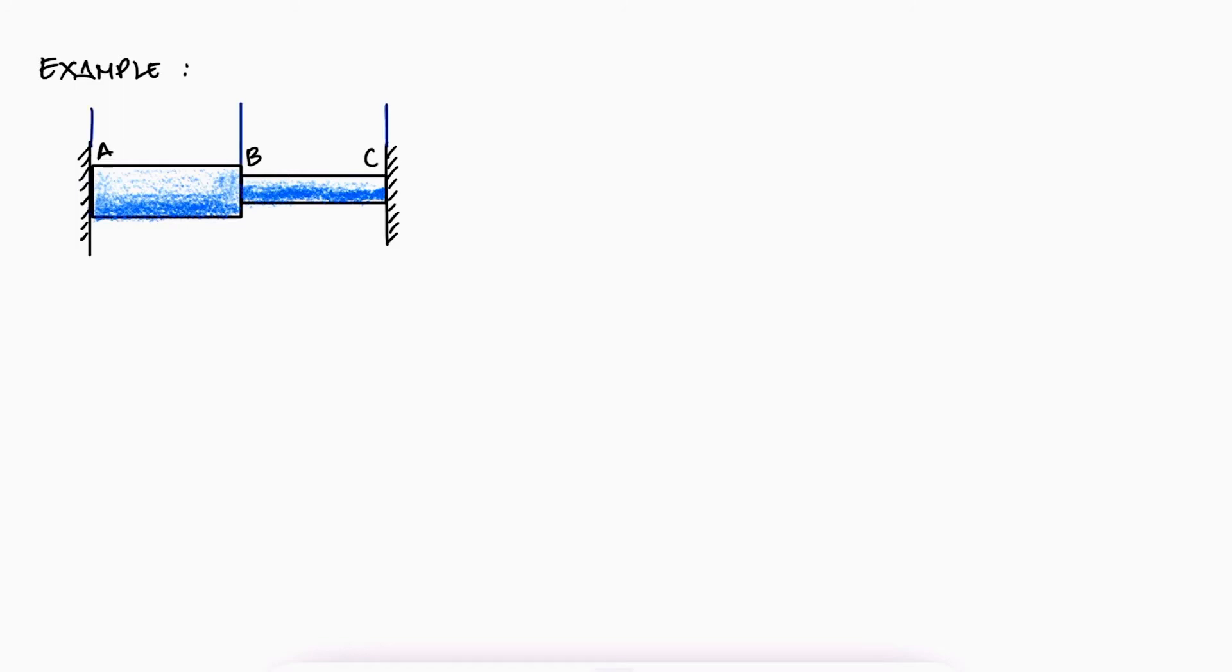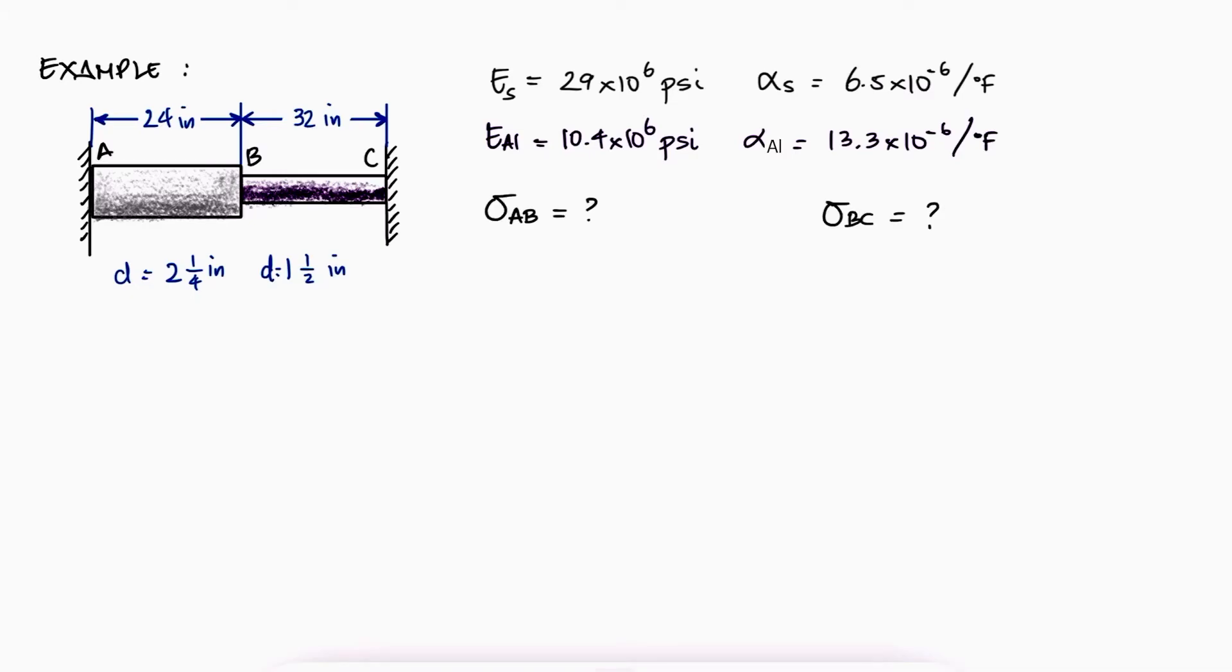Let's look at a rod of two cylindrical portions AB and BC that is barely touching two walls. By the way, that just means that the initial reaction forces at the wall are zero. The AB portion is made of steel, and the portion BC is made of aluminum. What are the stresses in each section, and what is the deflection of point B when there is a rise in temperature of 70 degrees Fahrenheit?